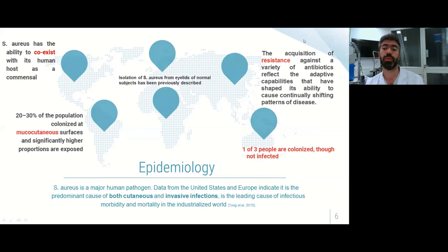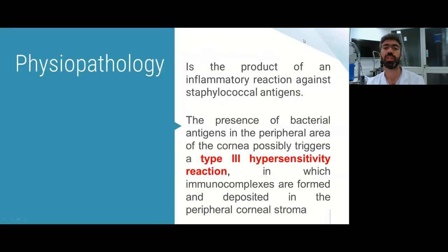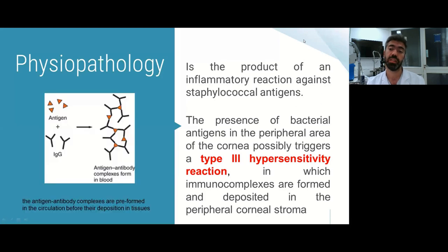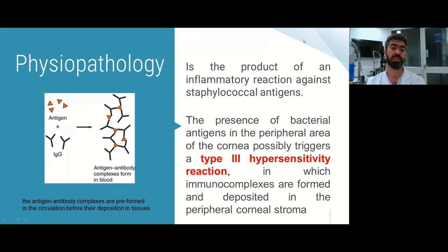One in three people are colonized with the bacteria but not infected. Regarding physiopathology, it's the product of an inflammatory reaction against staphylococcal antigens. The presence of bacterial antigens in the peripheral cornea possibly triggers a type 3 hypersensitivity reaction. In this reaction, immune complexes are formed and deposited in the peripheral corneal stroma, with the antigen and immunoglobulin antibodies together.